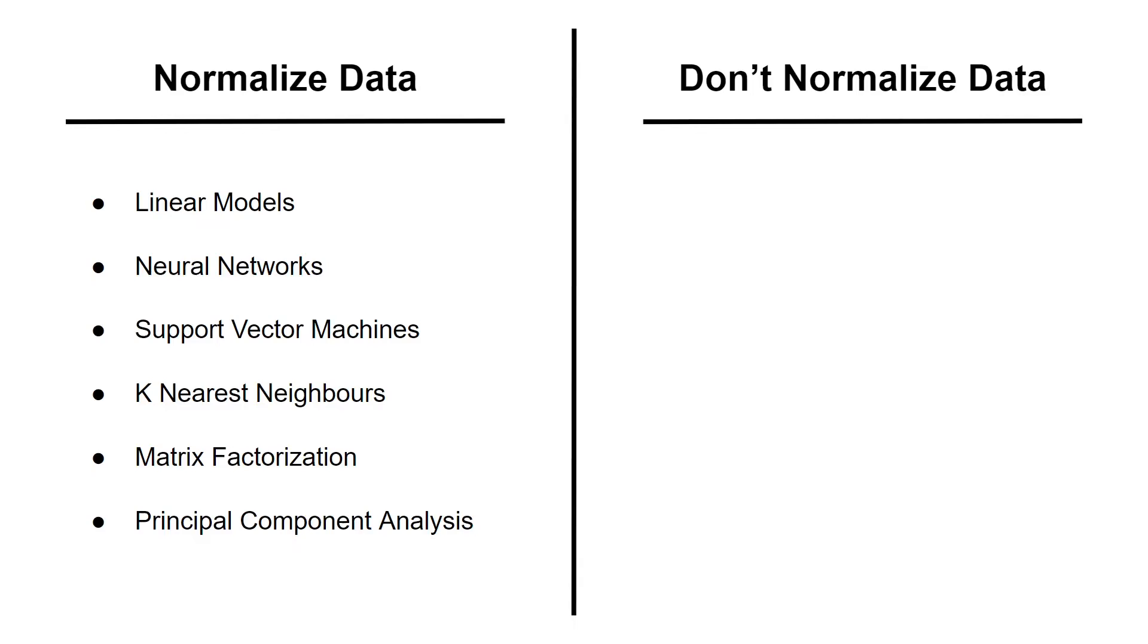However, as I said before, there are models that do not require data normalization and here we have firstly the models that rely on rules. These models will not be affected by any monotonic transformation of the variables and because scaling is a monotonic transformation, the relative order of smaller to larger values in a variable is maintained post-scaling.